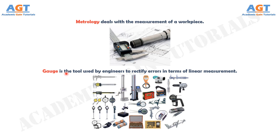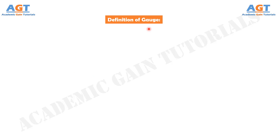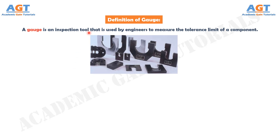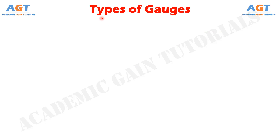Everyone is seeking for an appropriate knowledge about gauges due to the conciseness of the description. Looking into the definition of gauge: a gauge is an inspection tool that is used by engineers to measure the tolerance limit of a component. Gauges are mainly utilized by engineers in order to segregate the appropriate dimension of a workpiece. Some fundamental limitations are present within which a gauge should be made by manufacturers. Therefore, if the gauge seemed accurate in relation to an ideal gauge then the workpiece should be measured with that gauge. The operator can use a gauge without having vast knowledge in operating those mechanical components. Also, gauges consume less time as compared to other measuring devices.